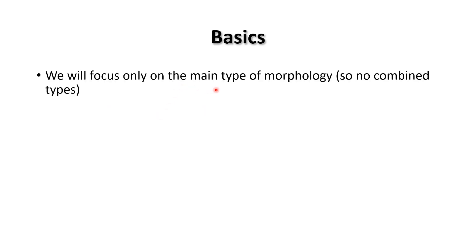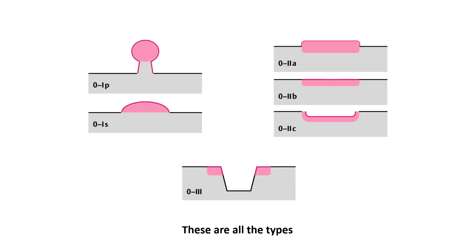Focusing on the main types of morphology: Type 1 is either pedunculated with a stalk, or sessile with no stalk. Type 2 has three categories: slightly elevated (type 2A), slightly depressed (type 2C), or completely flat (type 2B). Slightly elevated means less than 2.5 mm — the size of the cup of the biopsy forceps. What is more than this is sessile; what is less is type 2.